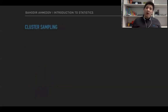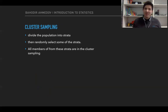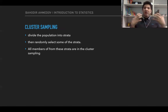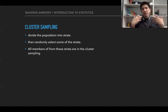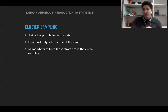Another method is cluster sampling, which is very similar to stratified sampling and people often confuse the two. In cluster sampling, we divide the population into strata, but instead of choosing people from each stratum, we first randomly choose some of the strata, and then choose members from each of the chosen strata randomly.